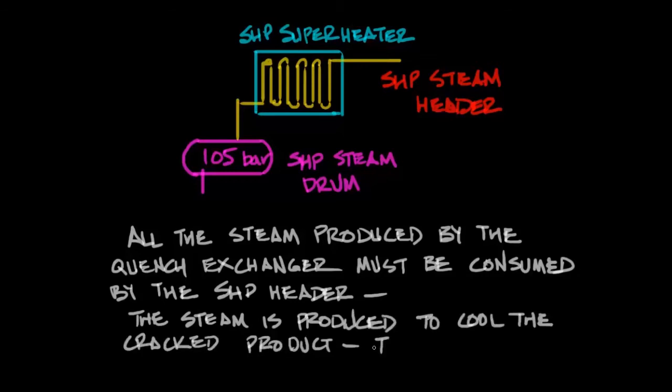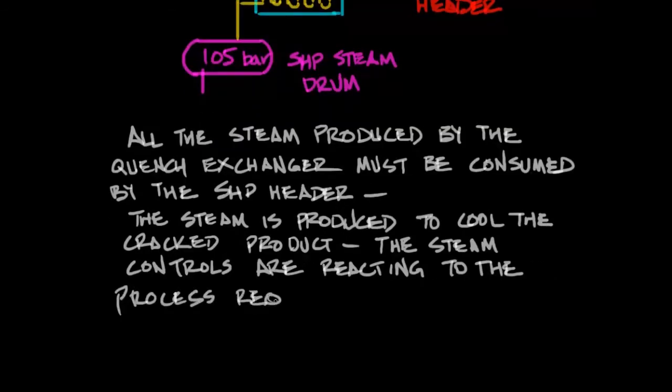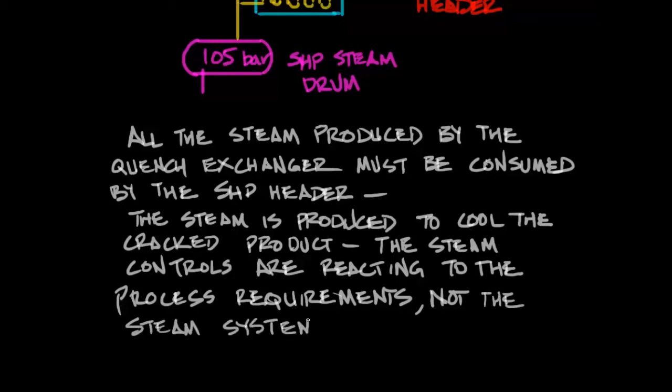The steam is produced by controlling the reaction. So the steam system is not responding to the steam system demands. The controls are responding to what the process needs are. The reaction is what's controlling how much steam is made.